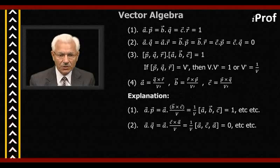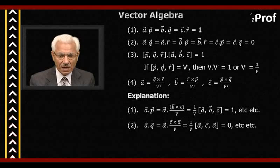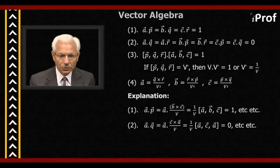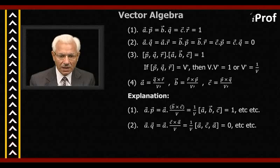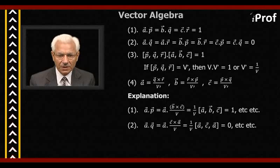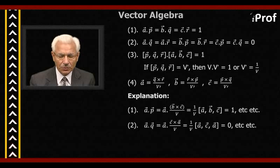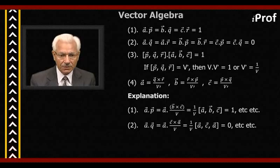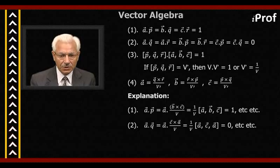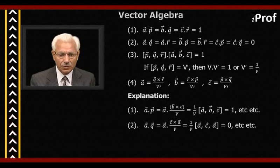First: A dot P equal to B dot Q equal to C dot R equal to one. Second: A dot Q is equal to A dot R is equal to B dot P is equal to B dot R is equal to C dot P is equal to C dot Q, and each of them is equal to zero. Third: triple scalar product of P, Q, R, into triple scalar product of A, B, C is equal to one.